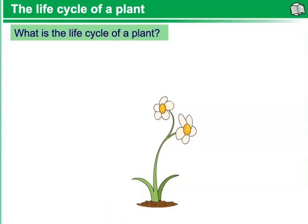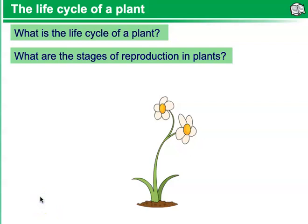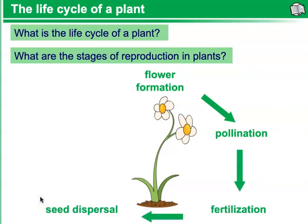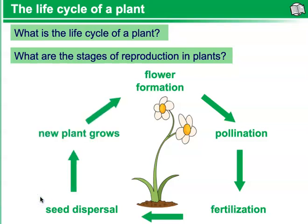The life cycle of a plant. What is the life cycle of a plant, and what are the stages of reproduction in plants? Initially, we have flower formation, then pollination, followed by fertilization, seed dispersal, and a new plant growing — which is then followed again by flower formation, pollination, fertilization, seed dispersal, and a new plant growing.